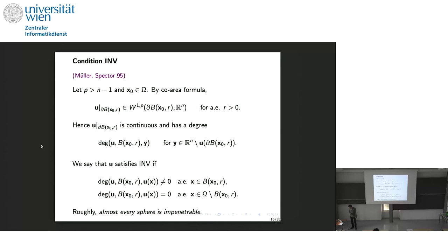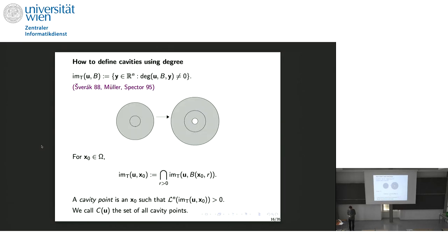Condition INF plays an important role: it means inside goes inside and outside goes outside, distinguished by the degree. Outside means degree zero, inside means degree different from zero — in practice one. By the coarea formula, u is W^{1,p} on the boundary of almost every ball, so the degree is defined. Condition INF means that inside the ball you go inside the ball, and outside the ball you go outside — so almost every sphere is impenetrable.